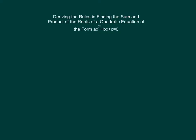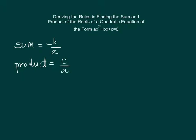Hi. You might have learned that to find the sum and the product of the roots of a quadratic equation of the form ax squared plus bx plus c is equal to zero, all we have to do is use the following formulas. For the sum, we just need to compute the value of negative b over a, and for the product, it is simply c over a.